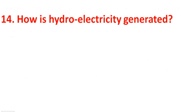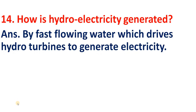How is hydro electricity generated? Hydro electricity kaisi banti hai, arthat jal vidyut jo paani se bijli banti hai, woh kaise banti hai? The answer is: by fast flowing water which drives hydro turbines to generate electricity. Bahut tivra gati se chalane wale paani ke srut, us prwah ki jal se hydro turbine chala karke, uske baad vidyut utpann karte hai — bijli ko generate karte hai.